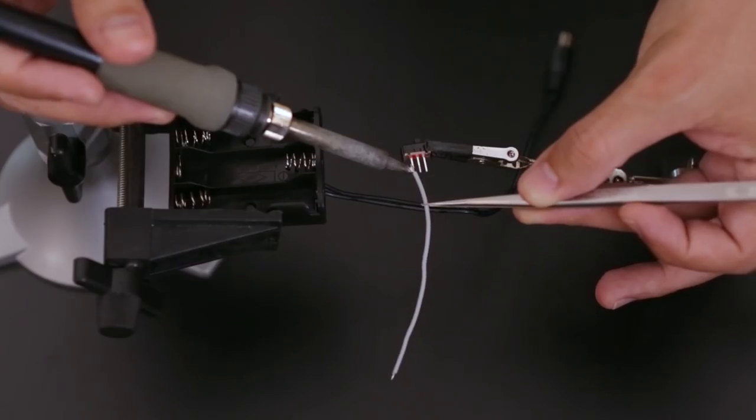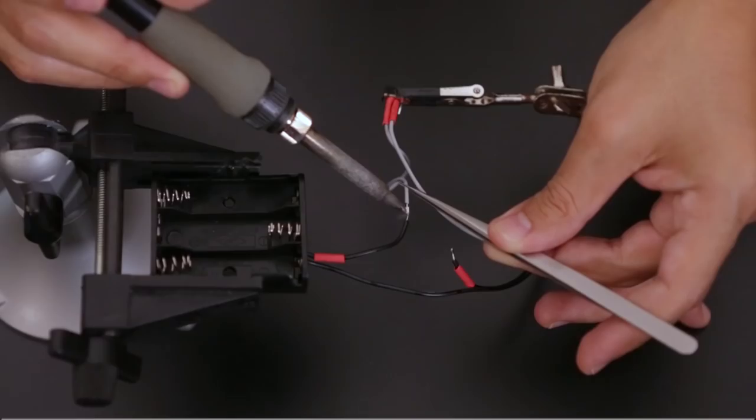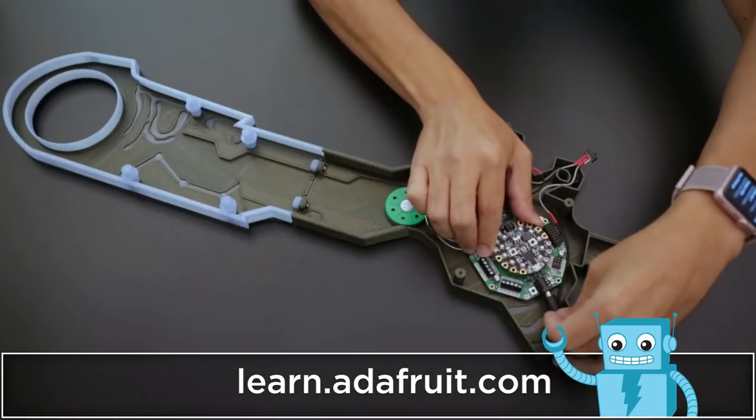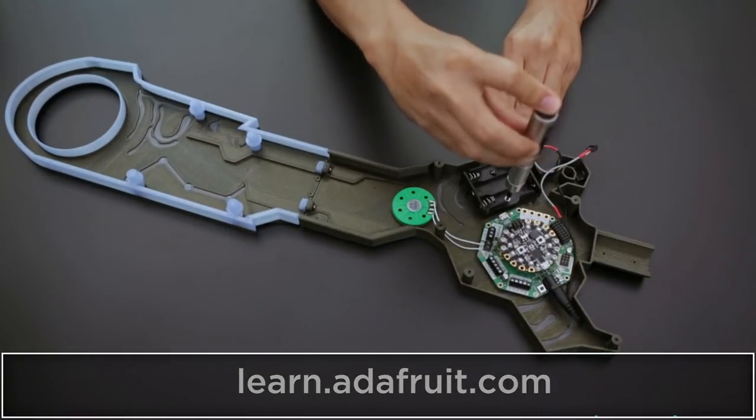To power this project, a slide switch is wired to a AA battery pack. If you're new to wiring electronics, check out the learn guide for a full rundown. The assembly instructions are documented along with the code and circuit diagram.